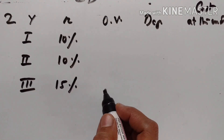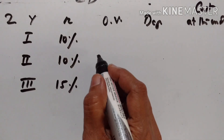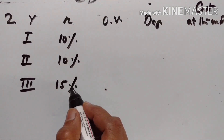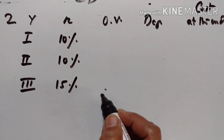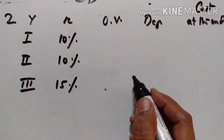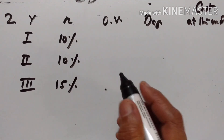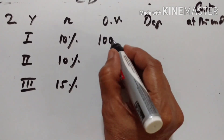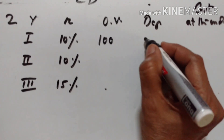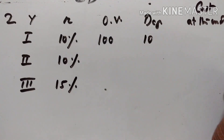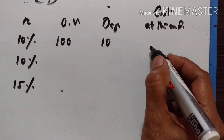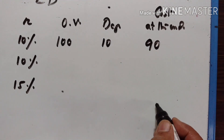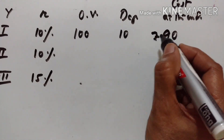Second problem: the value of a machine depreciated by 10% per year during the first two years and 15% per year during the third year. Express the total depreciation of the machine as a percent during the three years. Suppose the original value of the machine is equal to Rs. 100. So at the end of the first year, the cost of the machine is equal to Rs. 90 after the depreciation.